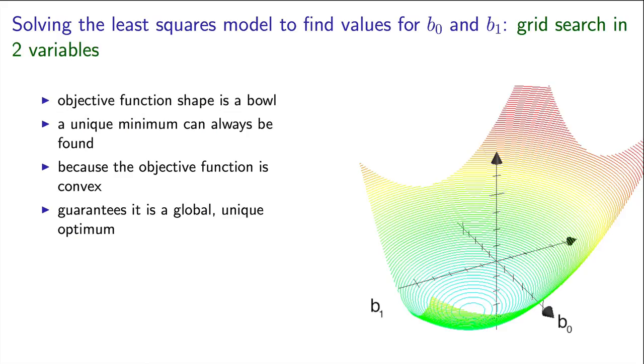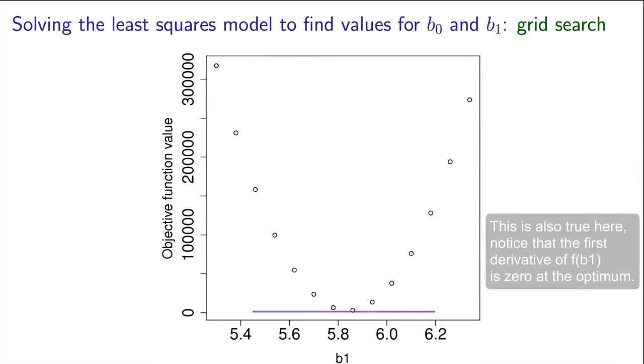If you look at any bowl-shaped function, and then the slope of that function, the bottom of the bowl where that minimum occurs has a slope of zero. The plane that is tangential to the bowl is horizontal, implying a slope of zero.